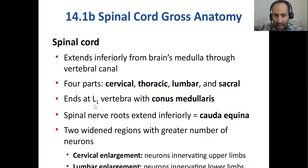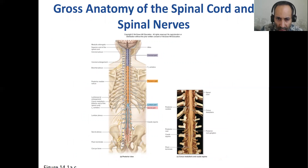In addition to all of those, you also see these plexuses. A plexus is an enlargement of nerves. You see a brachial plexus up here, and then you have a sacral plexus which forms further down.